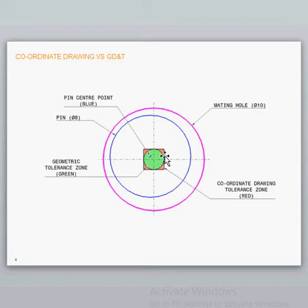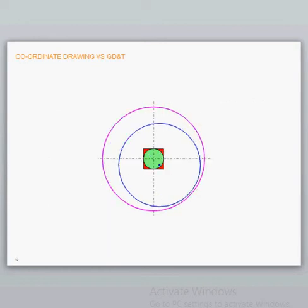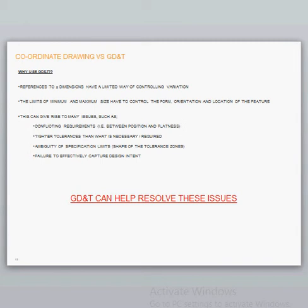We are giving dimensioning in a square tolerance zone, but when the pin is being inserted in the hole, that may or may not match. This issue would be addressed using GD&T. This is another image, which as we finally conclude, why do we use GD&T?